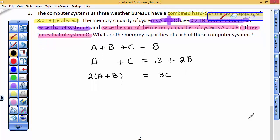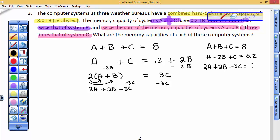Now I'm going to run out of space, so I'm going to have to clean these up fairly quickly. Let's write it over here. We have A plus B plus C equals 8. And then I'm going to subtract 2 times B from both sides. So I'll have A minus 2B plus C equals 0.2. And then here I have 2 times A plus 2 times B. I'm going to subtract 3 times C from both sides. So I have 2A plus 2B minus 3C equals nothing now.